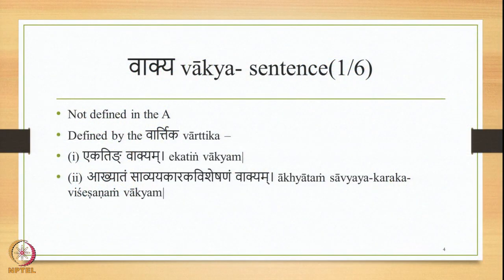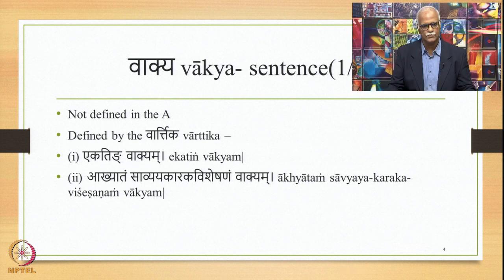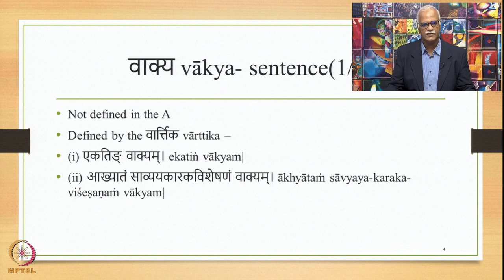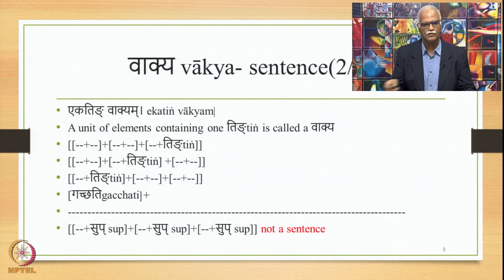We shall now study the Samjña Sutras in the text of the Ashtadhyayi and also in the Paninian grammatical tradition. Why I use the word 'Paninian grammatical tradition' will become clearer soon. For example, let us take the core concept of Vākya, meaning sentence. This is not explicitly defined in the Ashtadhyayi; it is used but not defined. This concept is defined by the Vārtikas of Kātyāyana, and in fact there are two Vārtikas which define this particular concept of Vākya.